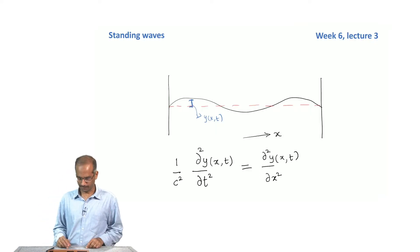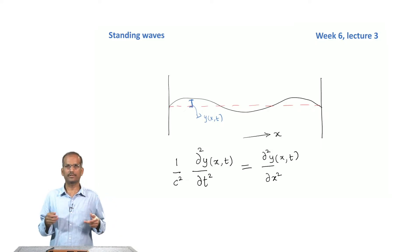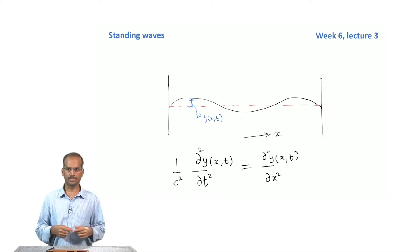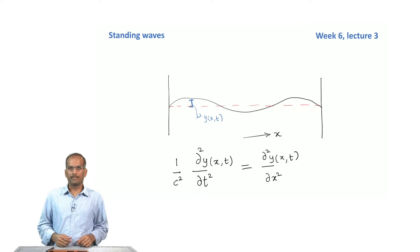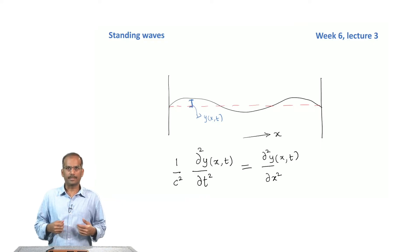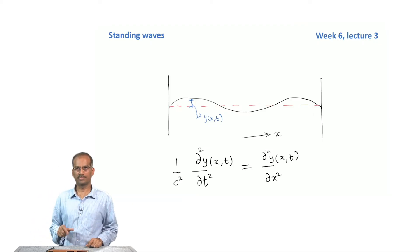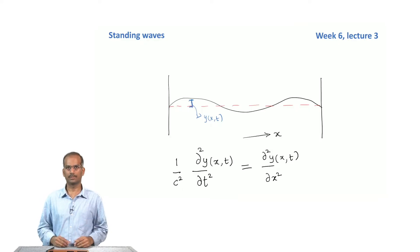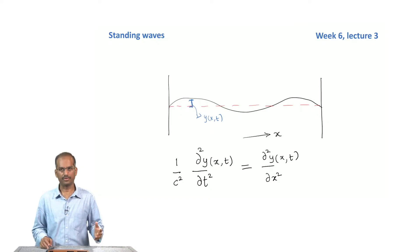Welcome to the third lecture of week six. Till now, we saw that you could start with a coupled system — for instance, a collection of particles tied together by strings, positioned at equal distances from one another. By taking the limit that the distance between them, a, tends to 0, we derived an equation called the wave equation.